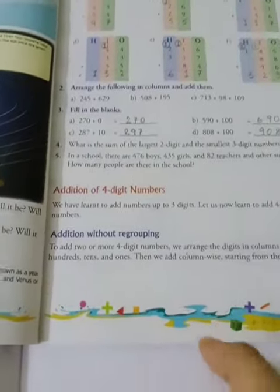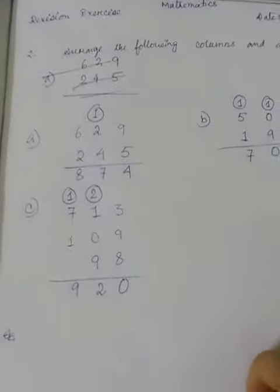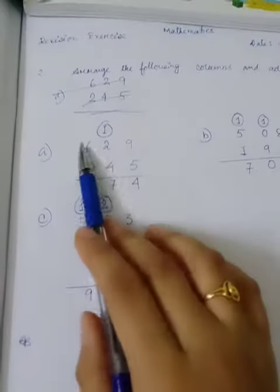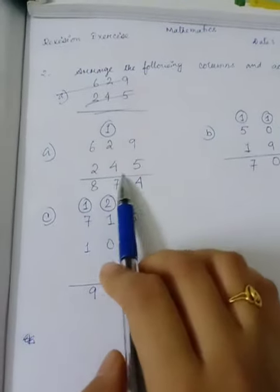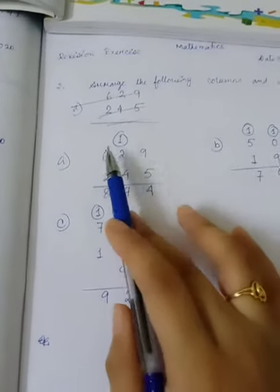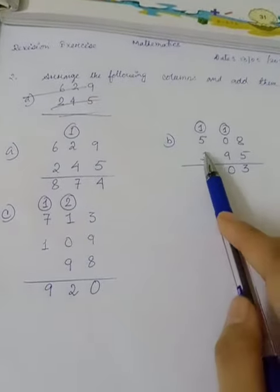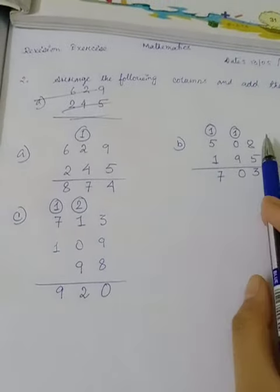Next, arrange the following in columns and add them. 2, 6, 29 plus 245. 5 plus 9 equals 14, 1 is carry over. 2 plus 1 equals 3. 3 plus 4 equals 7. 6 plus 2 equals 8. 5 plus 8 equals 3, 5, 0. 8 plus 1 equals 95. 5, 5, 5, 5, 5 plus 8 equals 3, 3, 3.